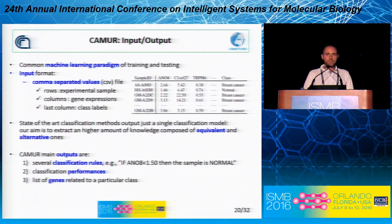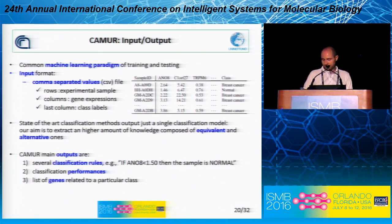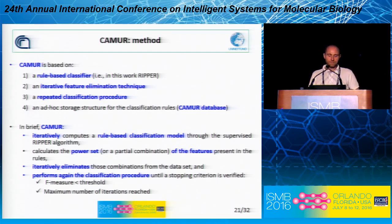What's the difference between CAMUR and other state-of-the-art classifiers? State-of-the-art classifiers extract a single best model. CAMUR, by adopting an iterative feature elimination and iterative classification procedure, can extract multiple rule-based models, so that you can extract all the genes that appear and are related to a given cancer class. The main outputs are the classification rules, the classification performance, and a list of genes related to a particular cancer class. It also has an internal database containing the classification rule for each analyzed class, and iteratively eliminates the genes present in the classification model before performing the classification procedure again.